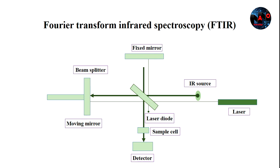Fourier Transform Infrared Spectroscopy, or FDIR, is used for the identification of organic, inorganic, and polymeric materials utilizing infrared light for scanning the samples. Alterations in the characteristic pattern of absorption bonds clearly indicate a change in the material composition.